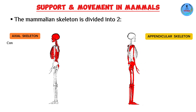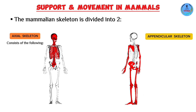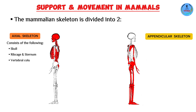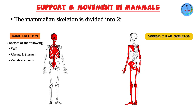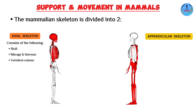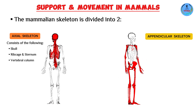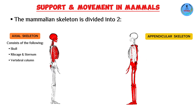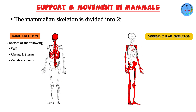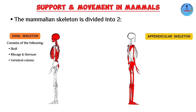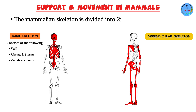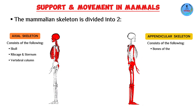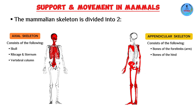The axial skeleton consists of the skull, the sternum, the rib cage, and the vertebral column. These bones are found at the core — the central part — of the body, and one of their main functions is protection of vital body organs such as the brain, the lungs, the heart, and kidneys.